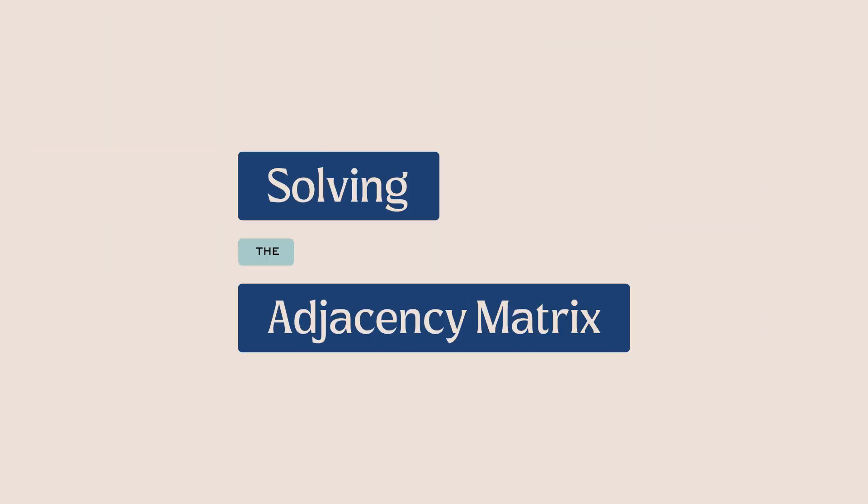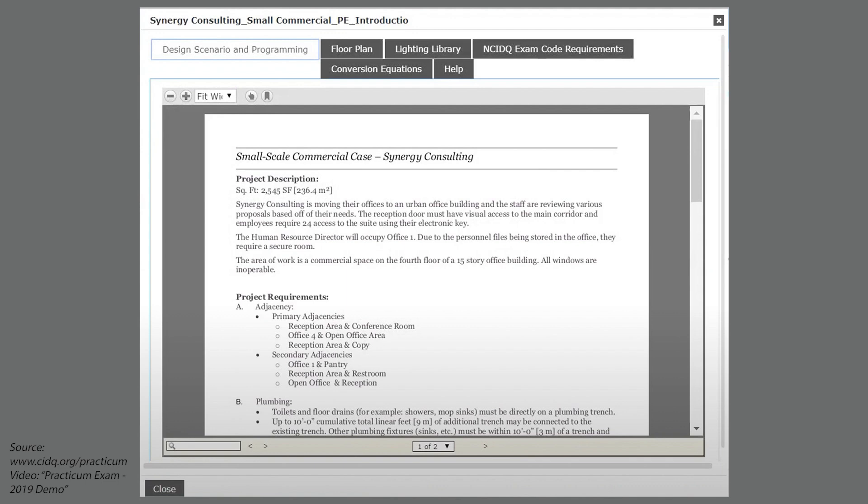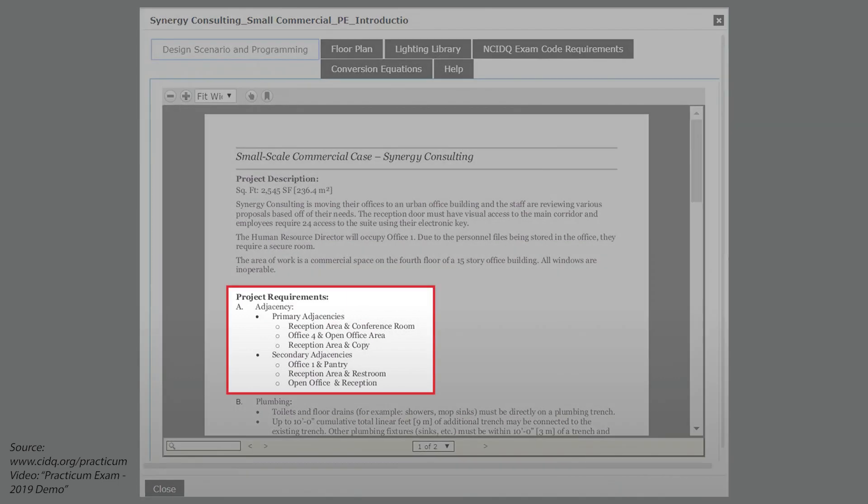On the practicum exam, you may see this question in any of the three case studies you're given. To complete an adjacency matrix, you will need a program outlining all of the spaces needed, as well as a list of primary and secondary adjacencies. You'll find that list in the design scenario and programming tab, which explains all of the project requirements. The primary adjacencies are the most important space relationships, meaning those two spaces must be in close proximity to each other on the floor plan. The secondary adjacencies are therefore not as important as the primary ones.